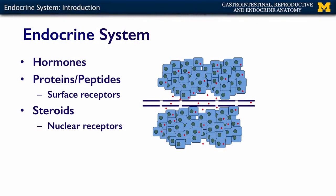Hormones can either be proteins or small peptides that bind to a surface receptor somewhere in the body. We also have steroid hormones — the sex steroids like testosterone, estrogen, and progesterone, which we'll discuss later. Steroid hormones act via nuclear receptors: they enter the cell and bind to a receptor already in the nucleus.